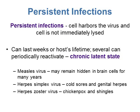Some animal viral infections are persistent infections, where a cell can harbor the virus without being immediately lysed. The virus hides for a while and then shows up later. These persistent infections can last for weeks or even the host's lifetime, and several can periodically reactivate — they have a chronic latent stage. For example, the measles virus can remain hidden in brain cells for many years and then reactivate. Herpes simplex virus is another good example — it causes cold sores or genital herpes and stays with the host for life, reactivating when the host becomes stressed.